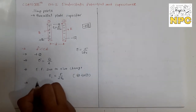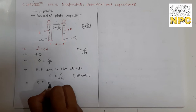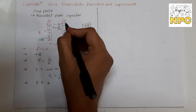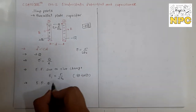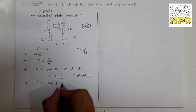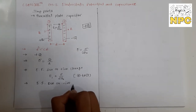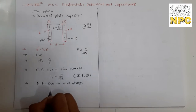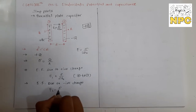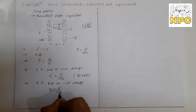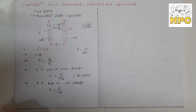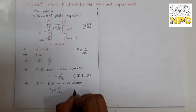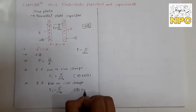Since E1 and E2 are in the same direction, the resultant electric field is E = E1 + E2. Note that for electric field (a vector quantity), direction matters. The potential uses sign, but for electric field we use direction. Since both fields point from positive to negative, they add up: E = σ/(2ε₀) + σ/(2ε₀) = σ/ε₀.